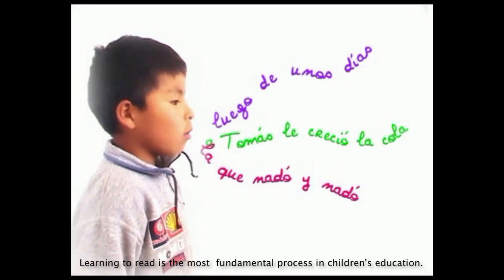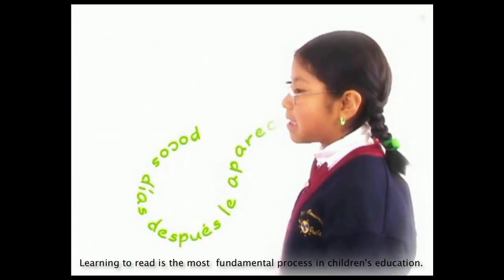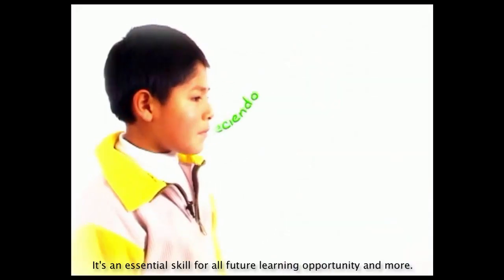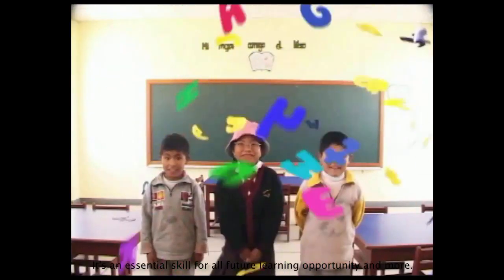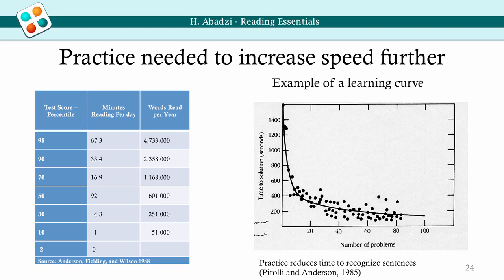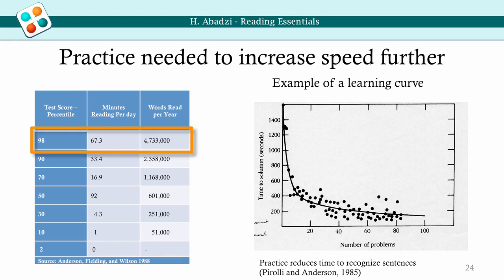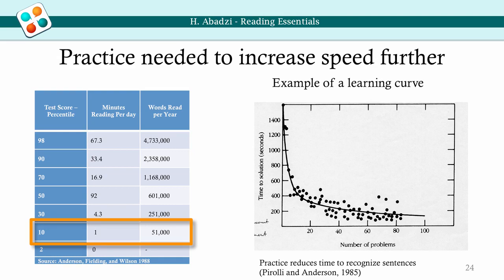Reading is the most important process in the education of children — an essential skill for all future learning. Attainment of automaticity is only the beginning. Practice increases speed and efficiency in extracting information from text. Learning curves on various repetitive tasks show an initially big reduction in reaction time that eventually levels off. To slide down the learning curve, many hours are needed. Students in the United States who score at the 98th percentile may read 4.7 million words per year, or 67 minutes per day. Those scoring in the 10th percentile may read only 51,000 words per year, or 1 minute a day.